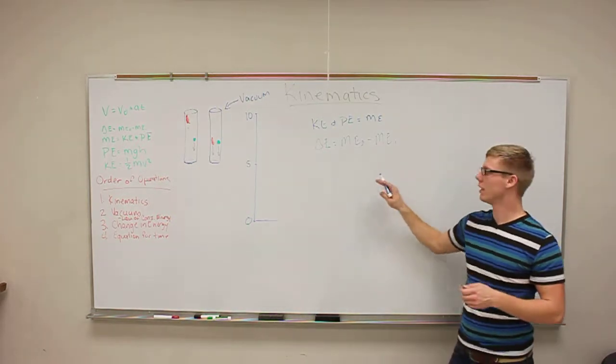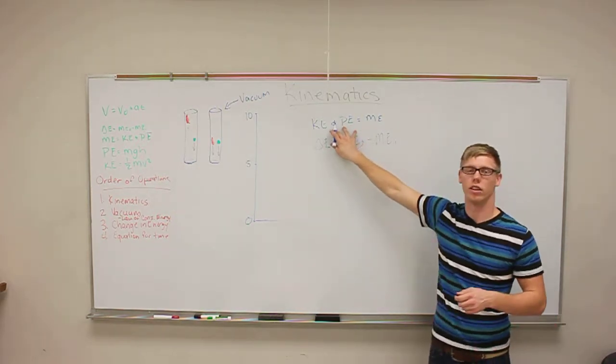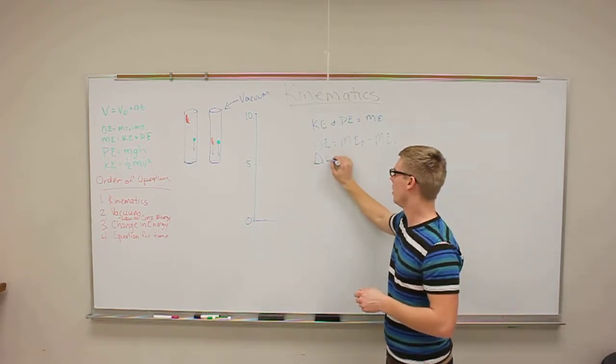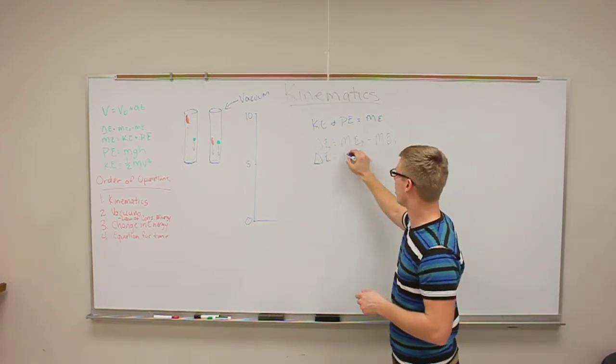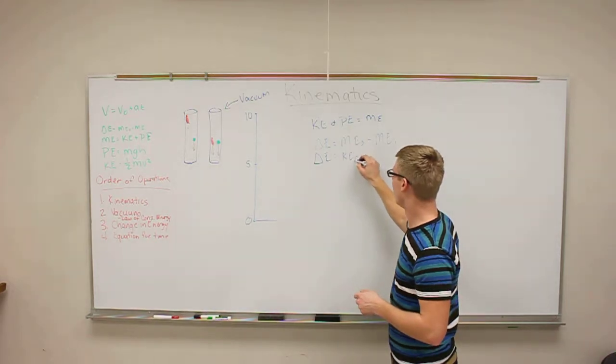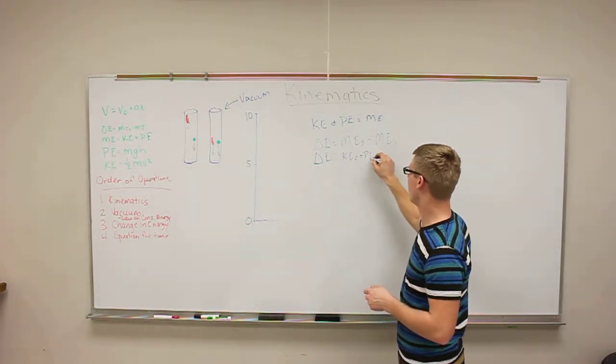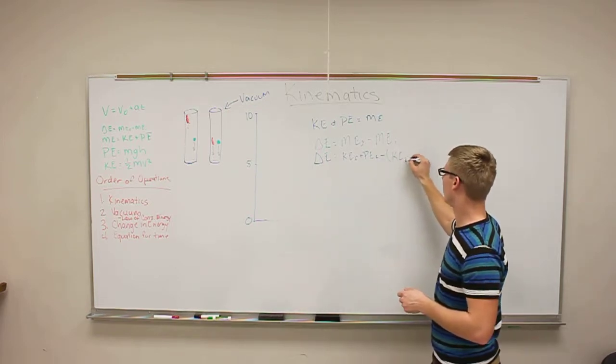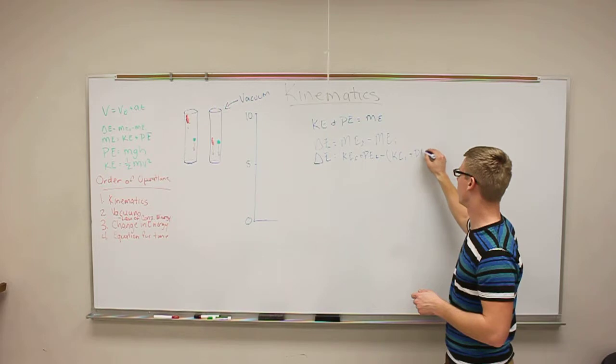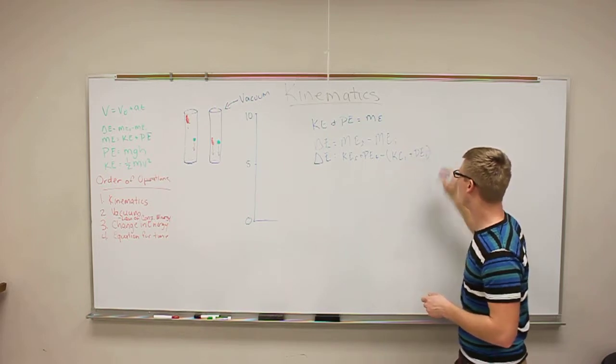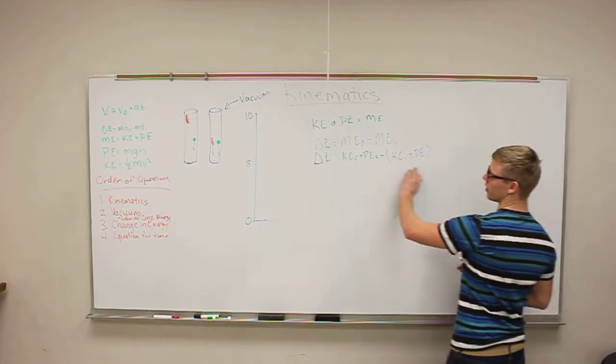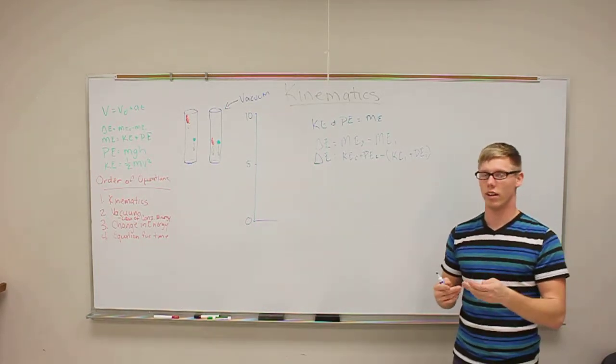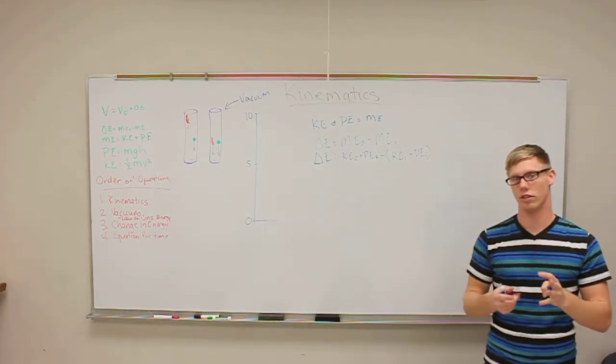If you break this down into both components, you have what is known as delta E equals kinetic energy final plus potential energy final minus kinetic energy of initial plus potential energy of initial. This enables us to learn an exact point of an object's energy level.